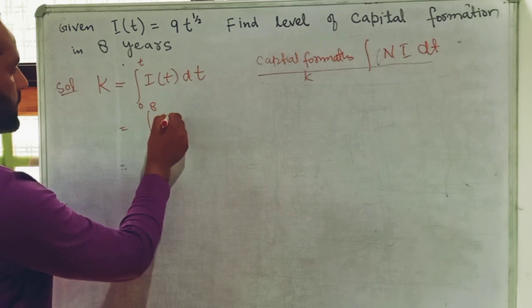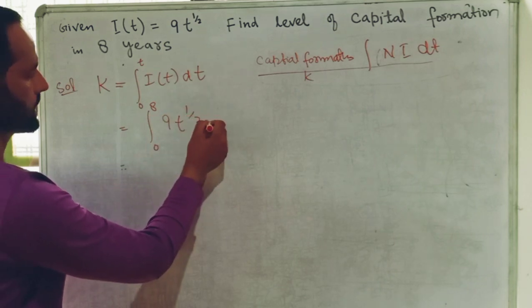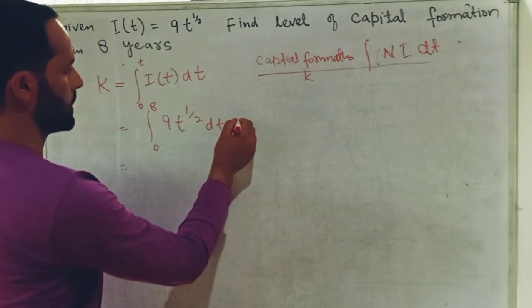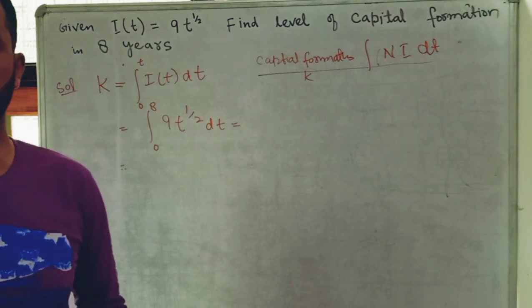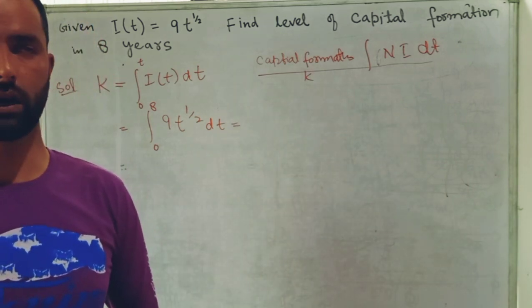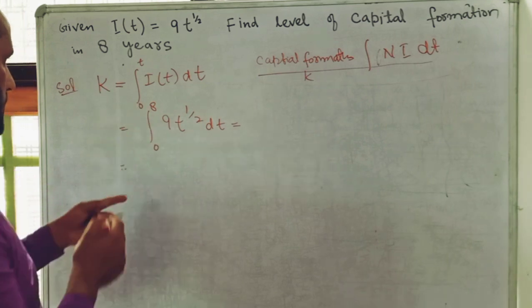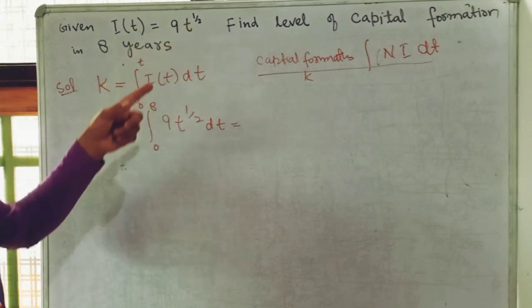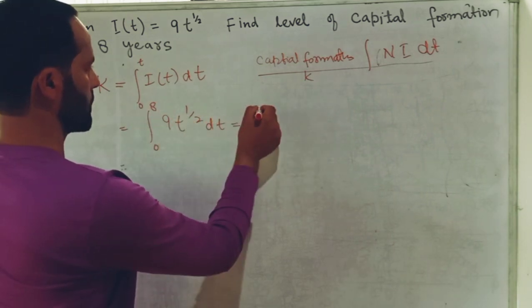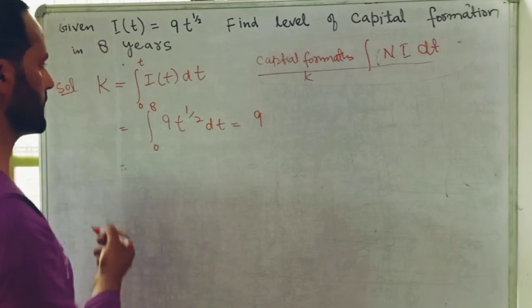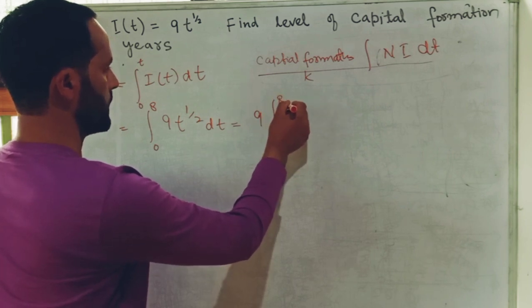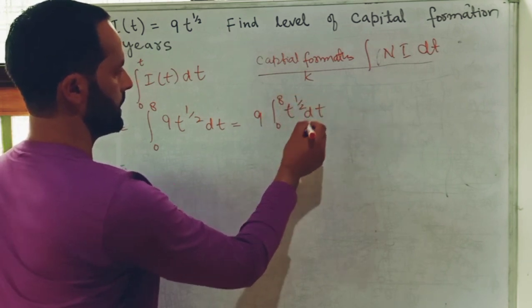We integrate the net investment function, which is 9t^(1/2), with respect to time. Capital stock or capital formation is equal to the definite integral of the net investment with respect to time. We integrate from the limits 0 to 8. Since 9 is a constant, we place it outside the integral, giving us 9 times the integral from 0 to 8 of t^(1/2) dt.